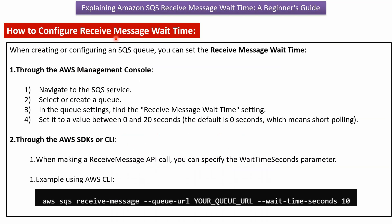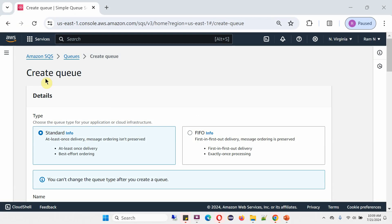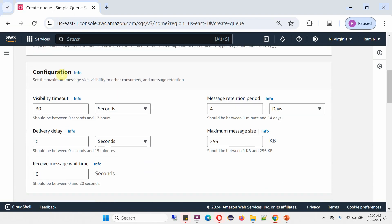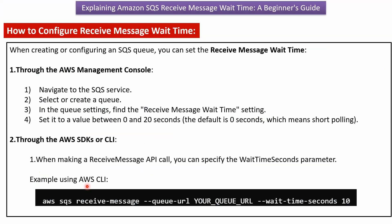Now we will see how to configure receive message wait time. We can do so using the AWS Management Console, AWS SDKs, or CLI. In the AWS Management Console, on the create queue page of AWS SQS, under the configuration section, you can see receive message wait time and set the value up to 20 seconds. For AWS CLI, you use a command to set the wait time in seconds.